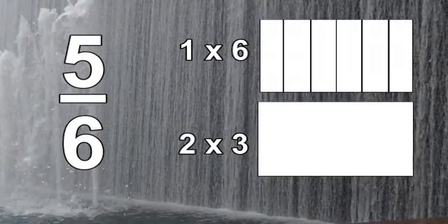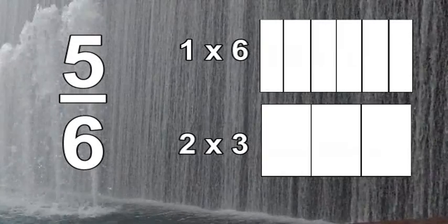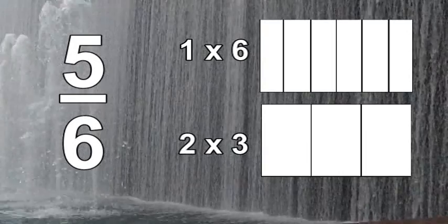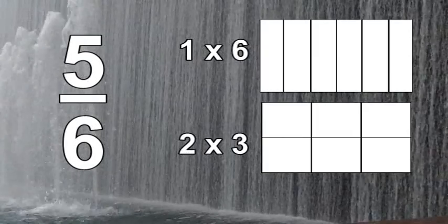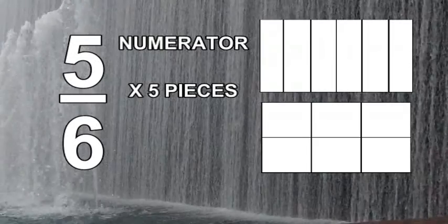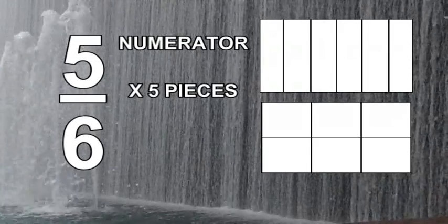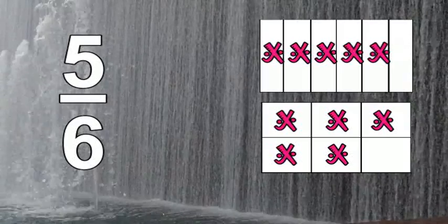Now let's slice up the 2-by-3 rectangle. We need 3 vertical columns, so make 2 slices vertically to make the 3 pieces. We need 2 rows going across, so slice it across halfway and you'll end up with 6 pieces in your rectangle. Now let's look at the numerator — the numerator is 5, so we need to X in 5 of the 6 pieces. Your model should look like this. By modeling 5 over 6, you can easily see that over half of each rectangle is X'd in — therefore, 5 over 6 is more than one half.